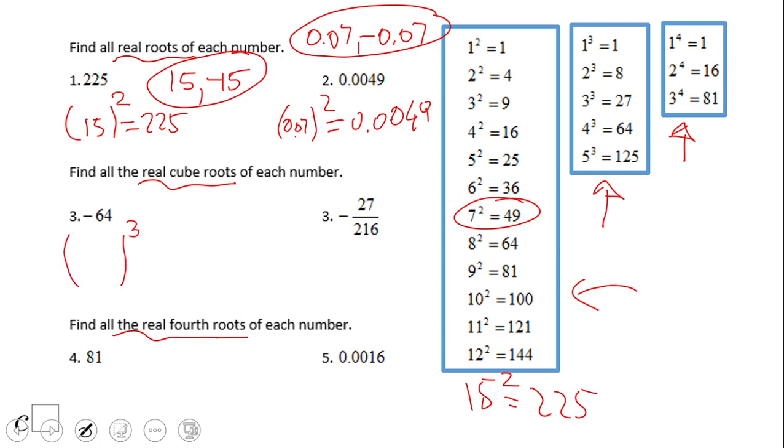Similar to this problem, what raised to the third power is negative 64? In this case I'm going to use this table, the one right here where you can see 4 to the third power is 64. So what needs to be raised to the third power to get negative 64? That is negative 4. So that is the only answer.